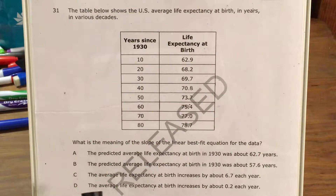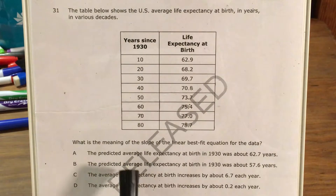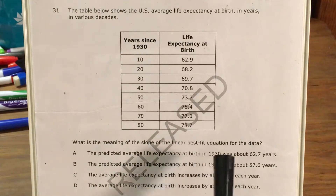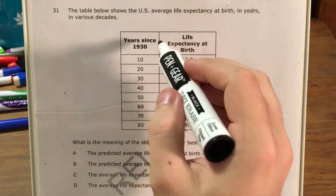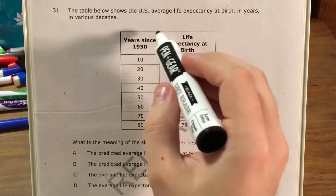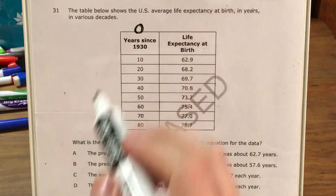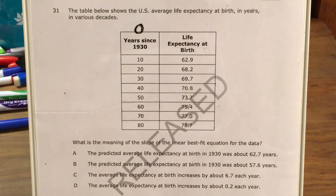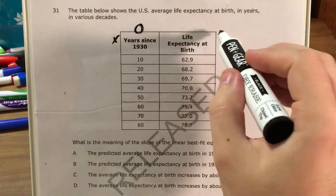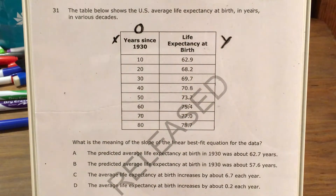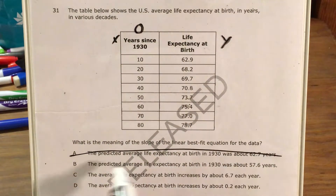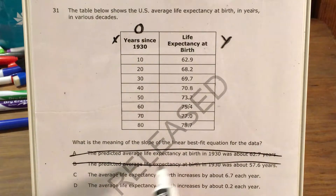If I look at my answer choices, A and B both talk about the predicted average life expectancy at birth in 1930. Since this column says years since 1930, 1930 itself would just be 0 years. When x equals 0, that's the y-intercept. Since we're interested in slope and not y-intercept, I'm going to eliminate those answer choices.